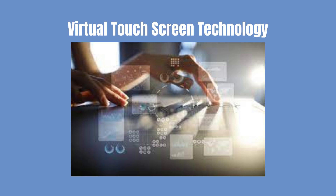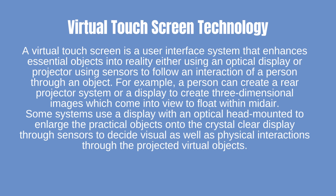A virtual touchscreen is a user interface system that enhances essential objects into reality either using an optical display or projector, with sensors to follow interaction through an object. For example, a person can create a rear projector system or display to create three-dimensional images which appear to float in mid-air. Some systems use a display with an optical head mounted to enlarge practical objects onto a crystal-clear display, using sensors to decide visual and physical interactions through projected virtual objects.